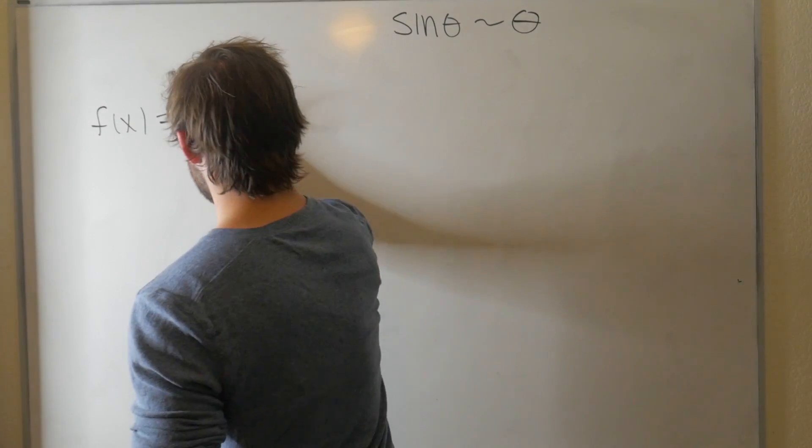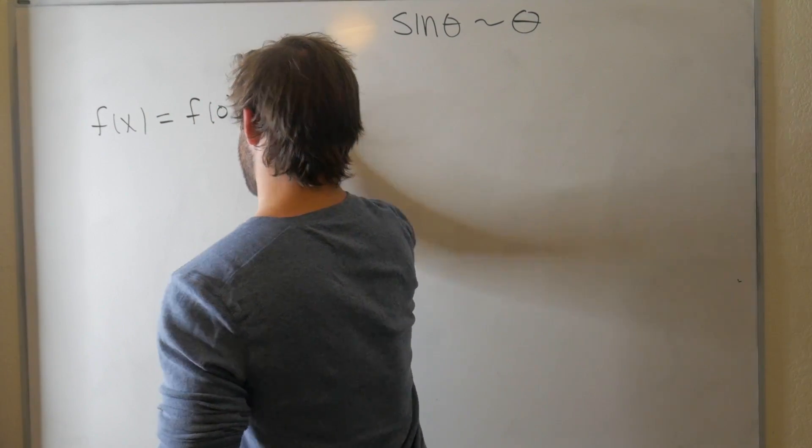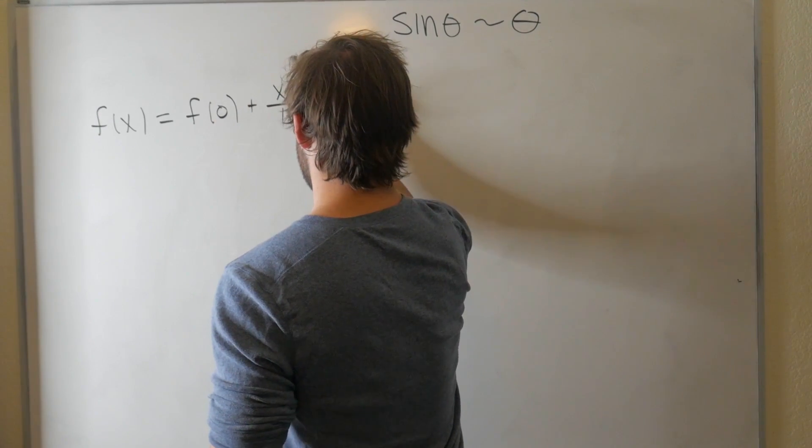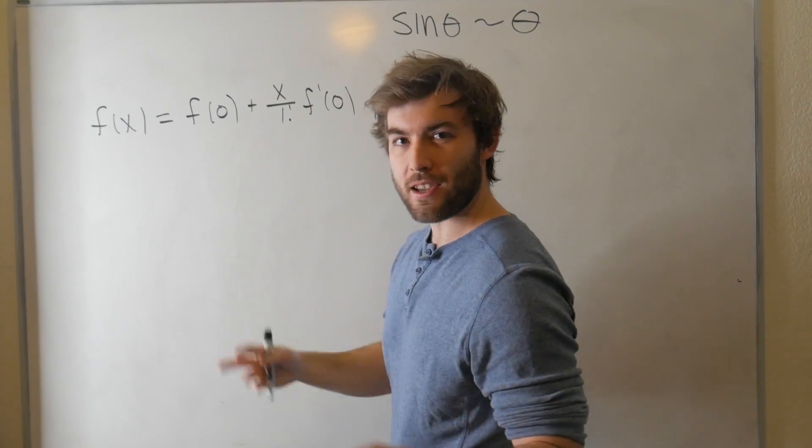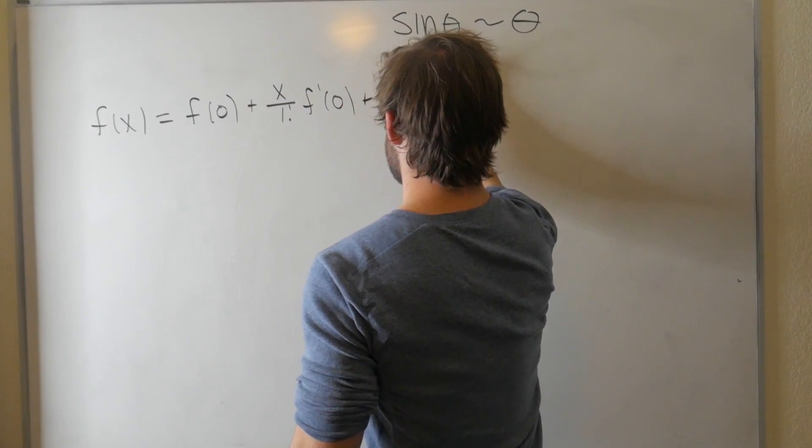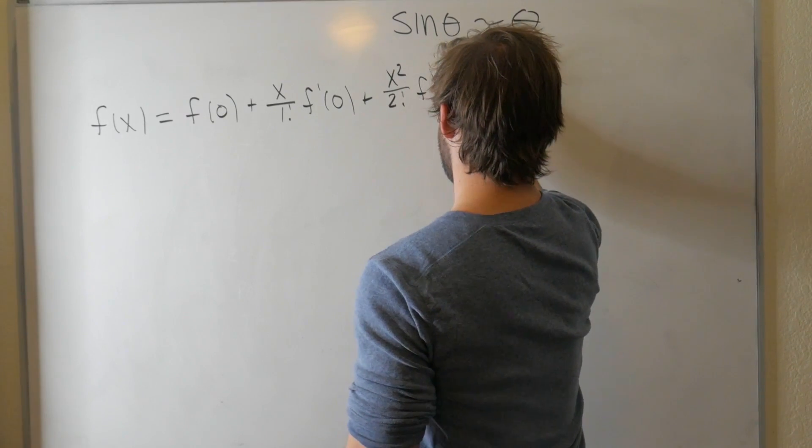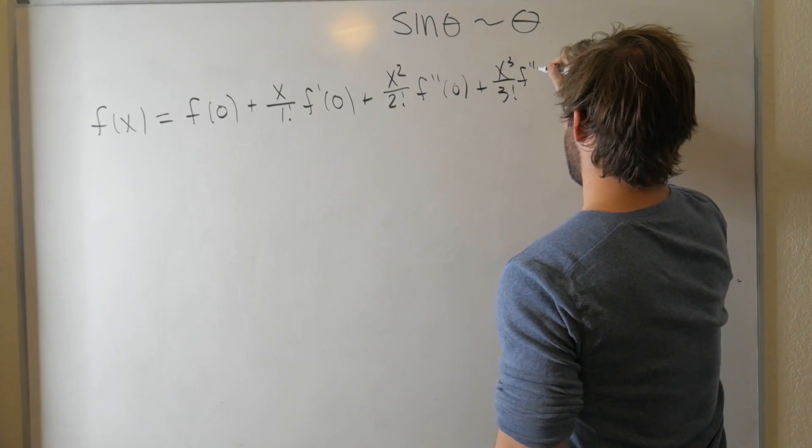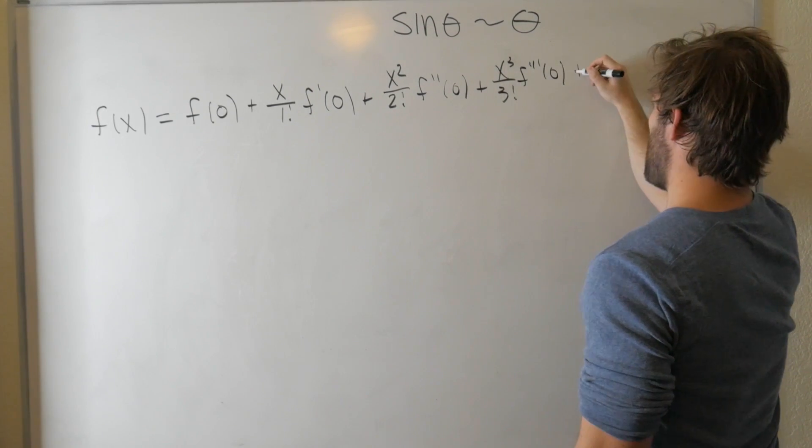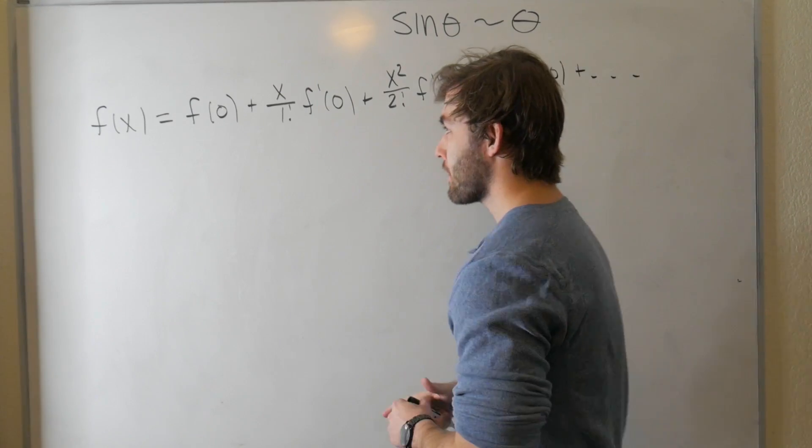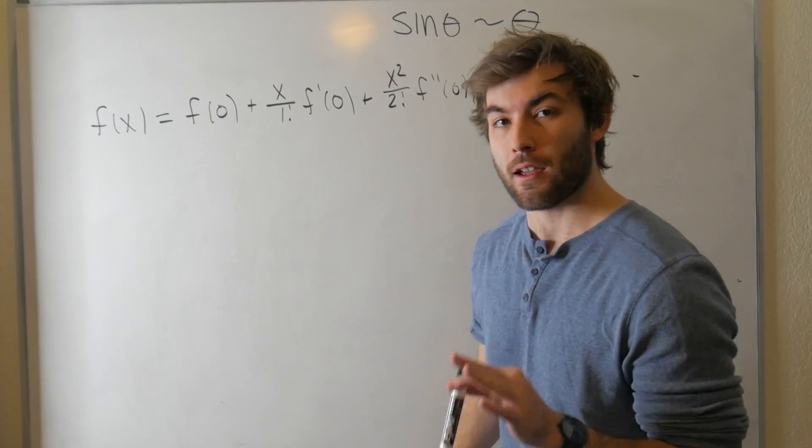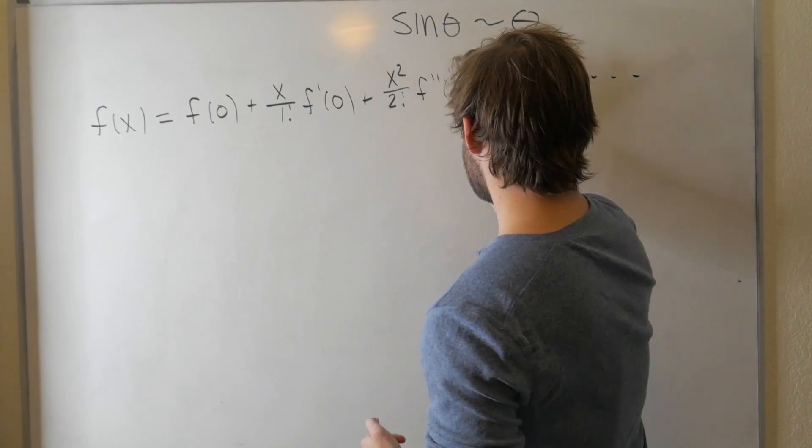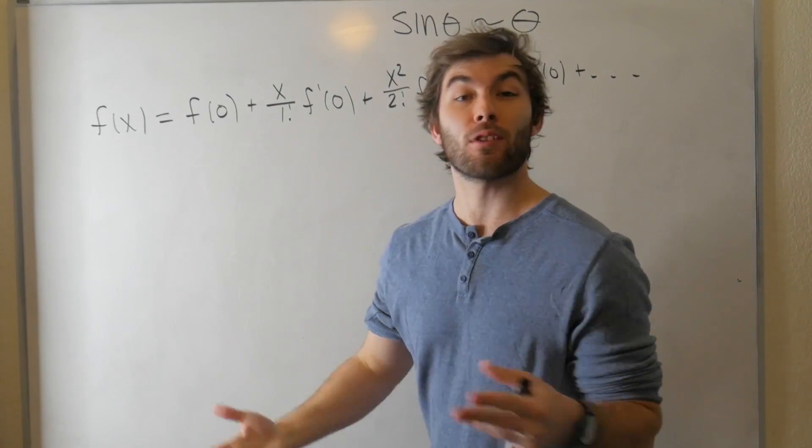The main idea behind the Taylor series is if you have some function where everything is kosher at a specific point, you can recreate the function by considering a bunch of derivatives at that point, scaled to a certain degree. So we're going to make that point be zero. Some people call that the Maclaurin series. I say, no, you don't get your own series just because you let a equal zero.